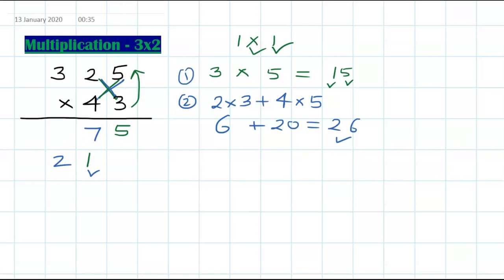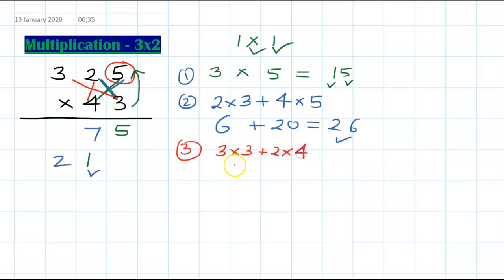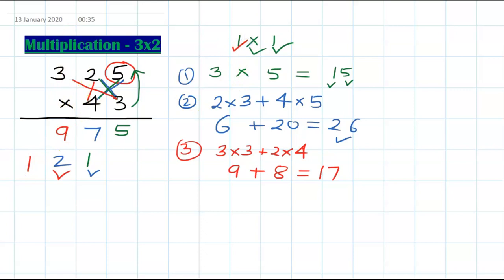Now hide the 5 and cross again. Step 3: 3 times 3 plus 2 times 4. That's 9 plus 8, giving 17, plus carry 2 is 19. Write down 9 and carry 1 forward.